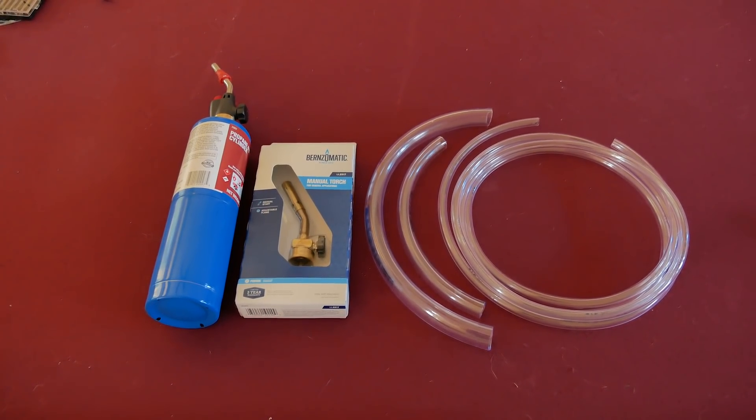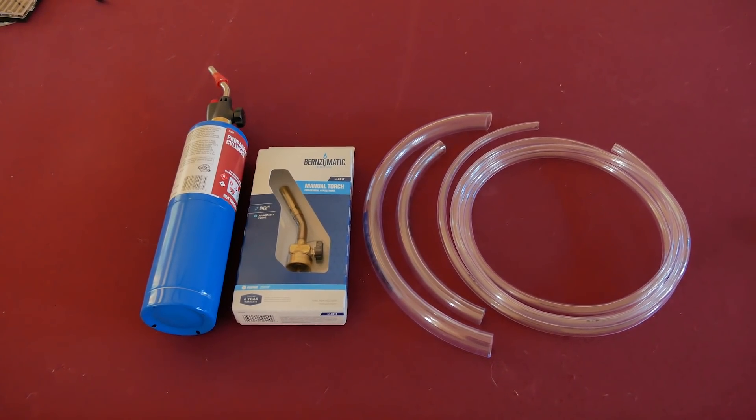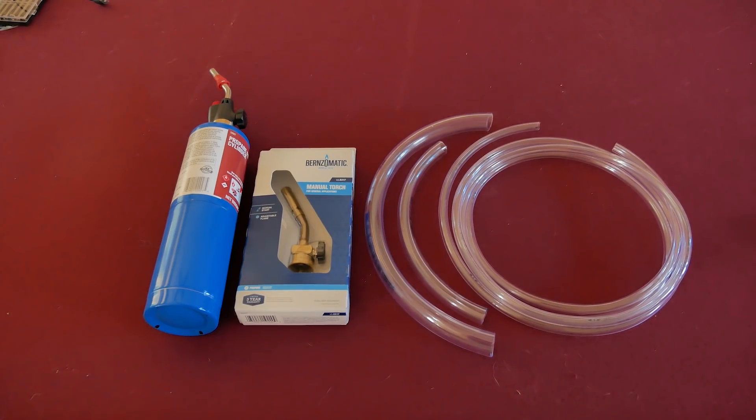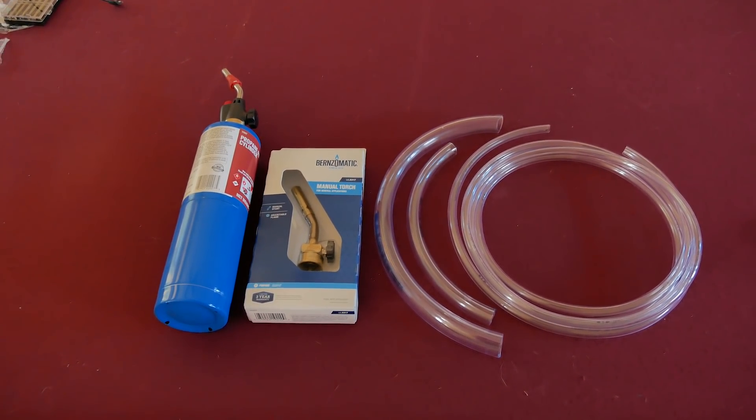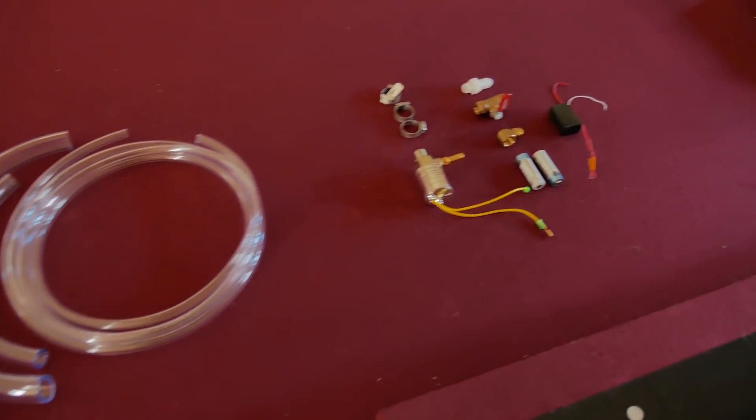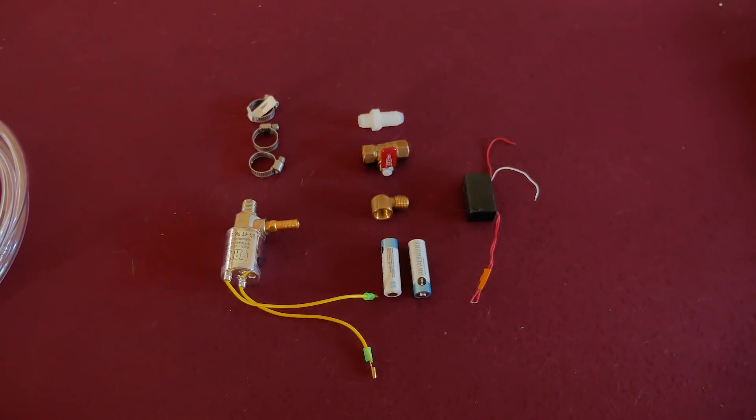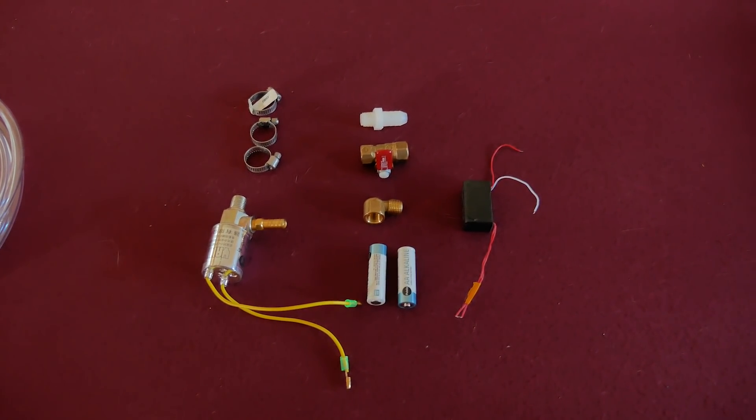Okay, if you've seen one of these propane-powered cannons online before, you'll know that usually it's kind of a manual operation where you just let out enough gas and then hit the spark to get the right fuel mixture. That's all well and good, but not very physics anonymous of us. So instead, we're going to use this collection of parts along with an Arduino to get the perfect fuel mixture and have it completely automated.